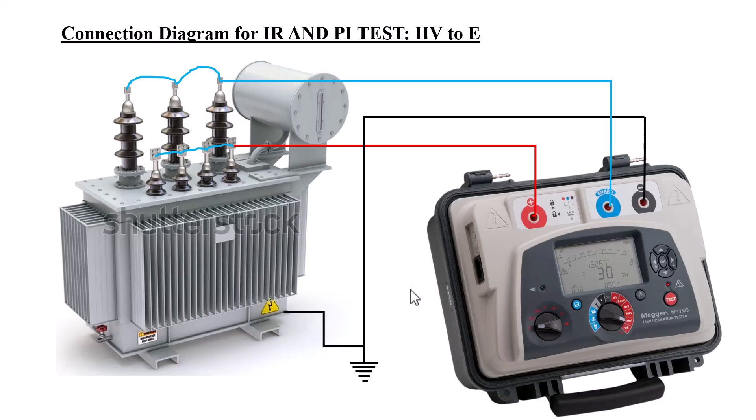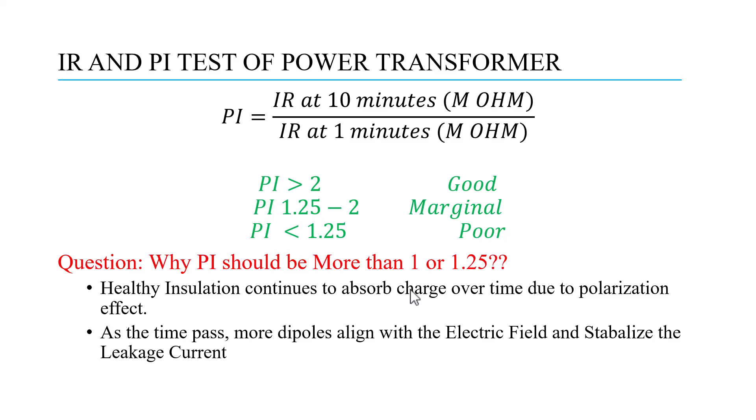Now I will discuss the Polarization Index (PI). The test connection remains the same. The polarization index is the ratio of the IR at 10 minutes divided by the IR at 1 minute. A PI greater than 2 is very good. A PI between 1.25 and 2 is marginal or acceptable. A PI less than 1.25 is very poor, indicating contamination of the insulation — such as moisture — which is not good. The question is: why should PI be greater than 1.25, and why is a higher value recommended?